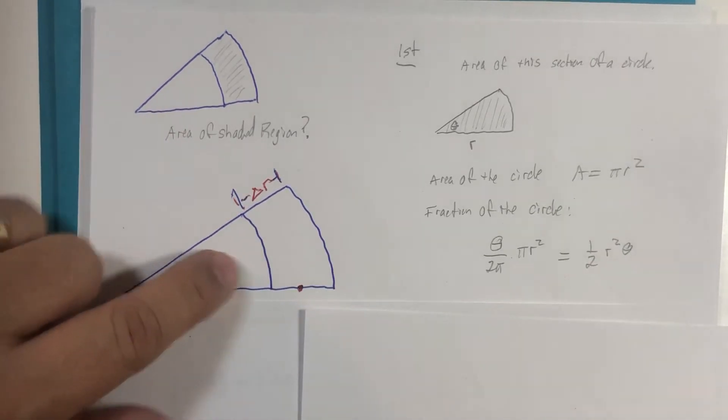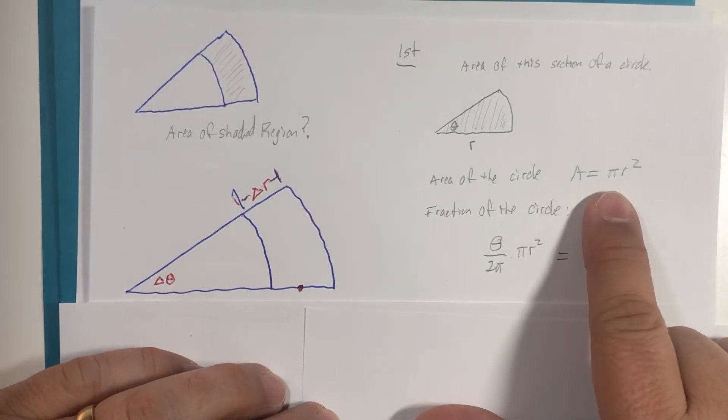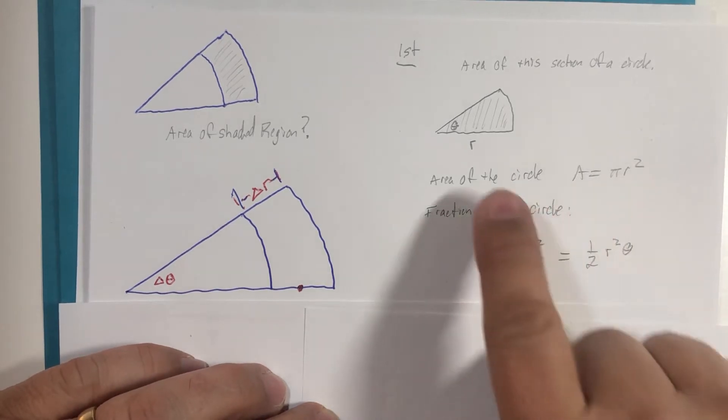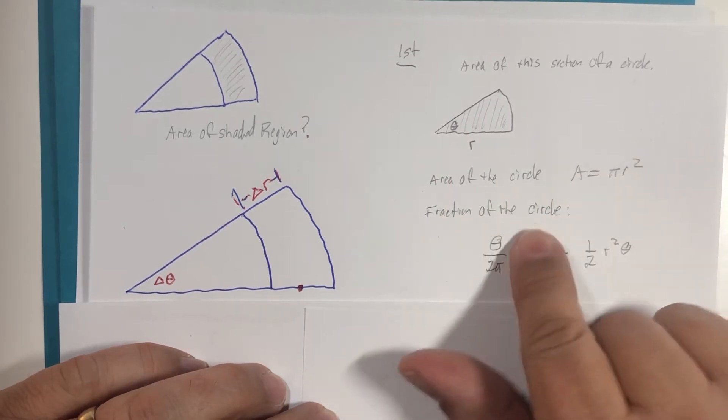The area of a circle is of course π multiplied by the radius squared, and well, we have a slice of pizza so we don't have the entire circle—we have a fraction of it.